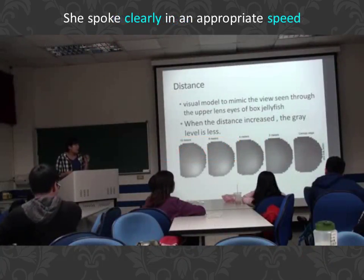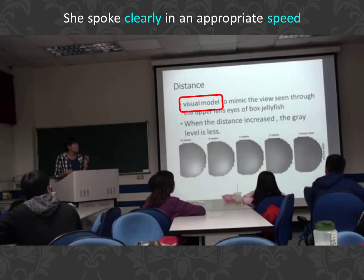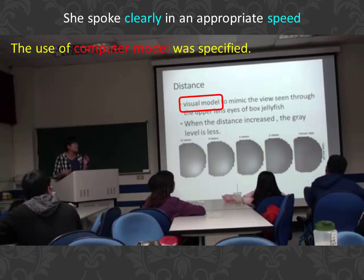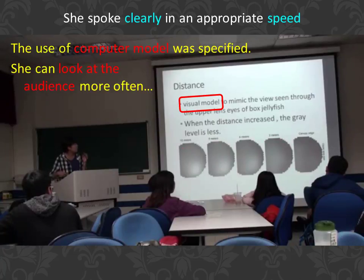We can see that these are the same images, but it was processed by the visual model to make the view seem through the upper landslides of Park Street Beach. We can also see that when the distance increases to 4.8, the gray level is less.